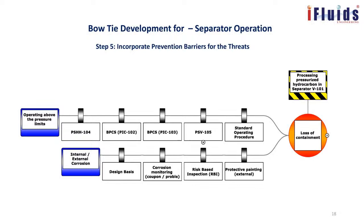These two arms on the left side of the bowtie — one against operation above pressure limits and one against internal or external corrosion — form the prevention side. When all these barriers are in place and effective, the probability of vessel failure is very remote. That's the reason these barriers are very critical.